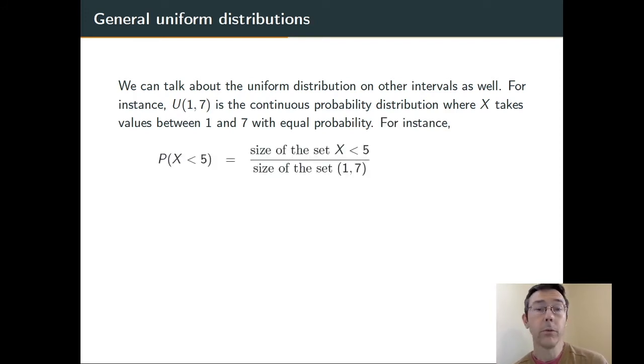So, let's do an example or two from this distribution. The probability that X is less than 5 is going to be the size of the set X < 5 divided by the total width of the interval from 1 to 7. So, overall, I'm getting 4 divided by 6, or 2/3. This is reflecting the fact that the set X < 5 covers 2/3 of that interval.